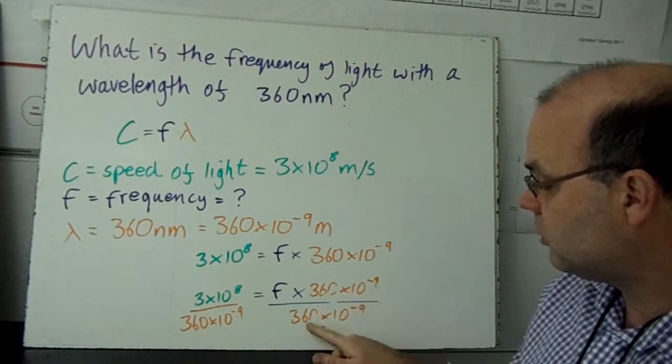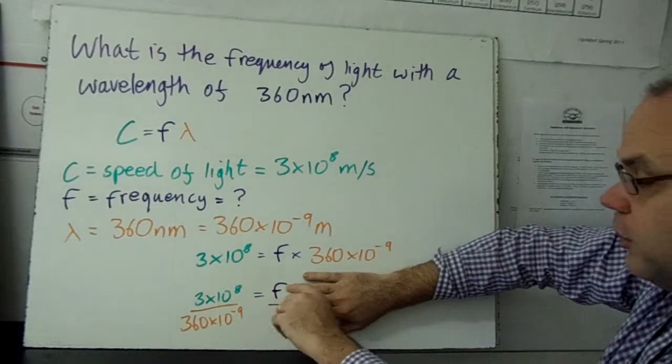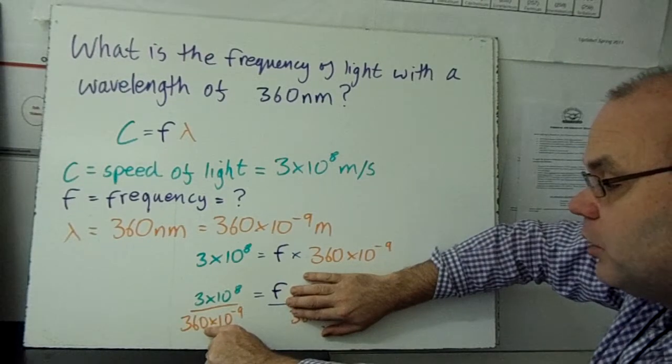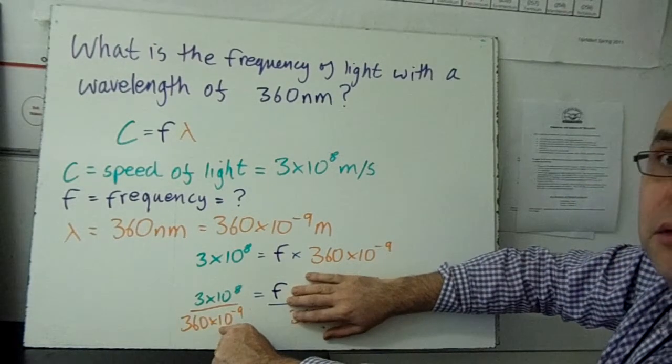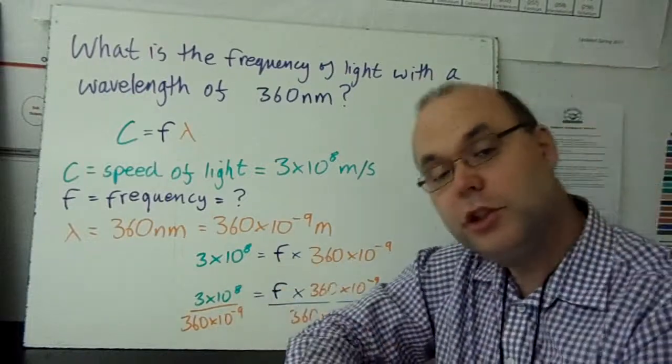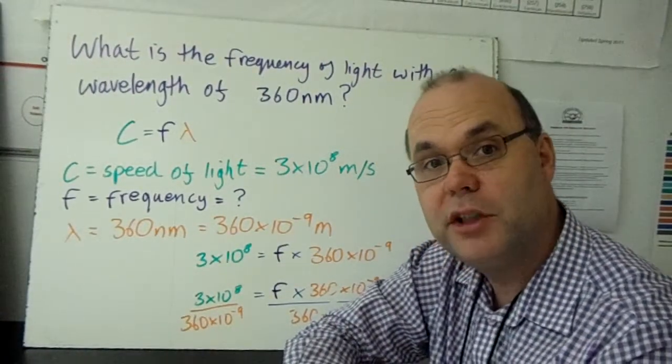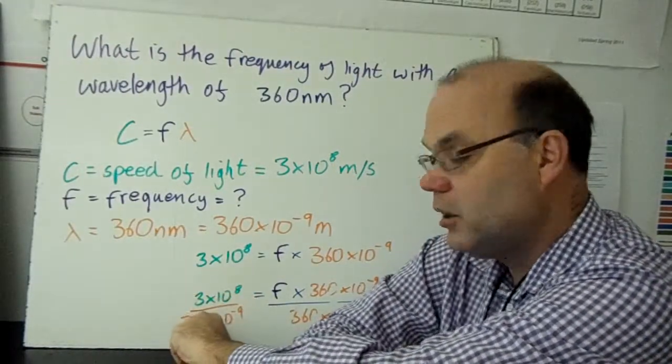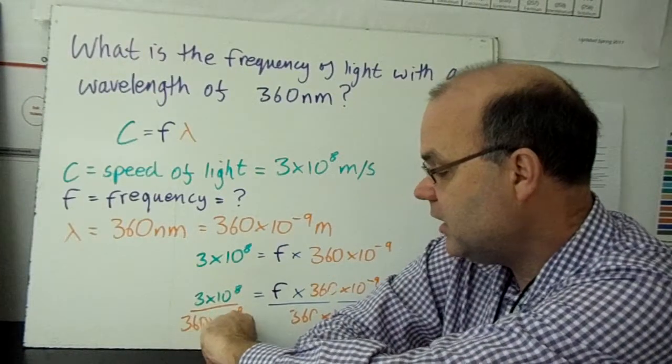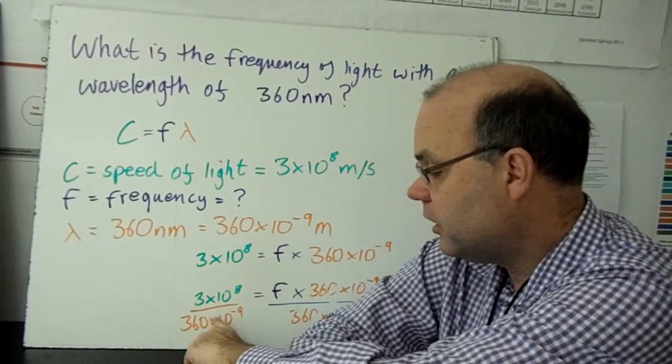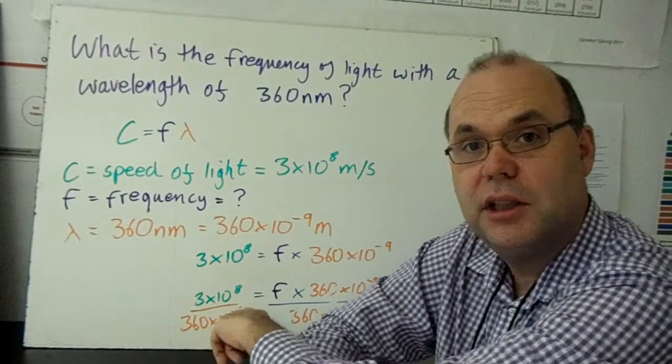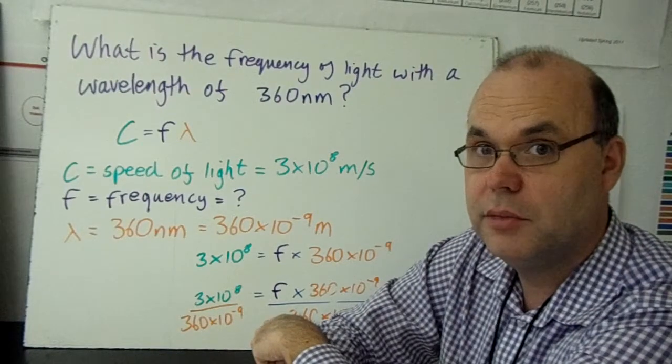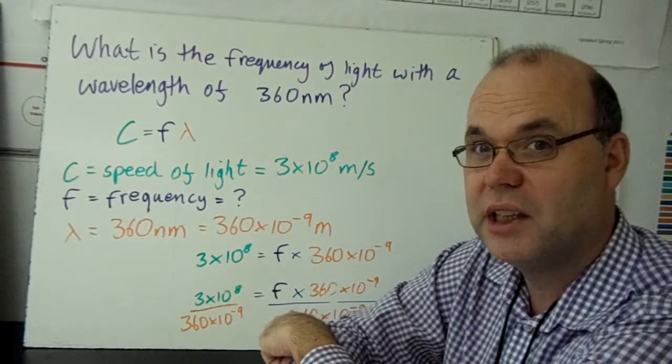Now these two cross out and cancel. We're left with F equals 3 times 10 to the 8 divided by 360 times 10 to the minus 9, which we just need to put into our calculators, remembering to use the E button. 3 E 8 divided by 360 E negative 9. If you put the whole 10 times 10 to the minus 9 without using parentheses, your order of operations may mess up and you get the wrong answer. Use the E button. It's just the right thing to do.